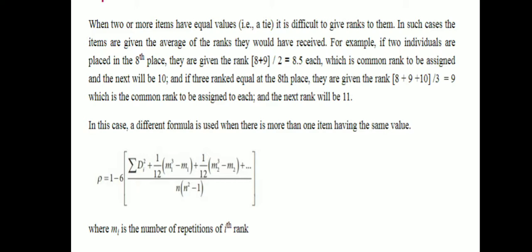The correction factor CF is defined as: CF = (m1 cubed minus m1) divided by 12, plus (m2 cubed minus m2) divided by 12, plus (m3 cubed minus m3) divided by 12, and so on. Here m1 is the number of times the first rank is repeated. For example, suppose the value 3 is repeated twice, so m1 equals 2. If the value 8 is repeated three times, then m2 equals 3.